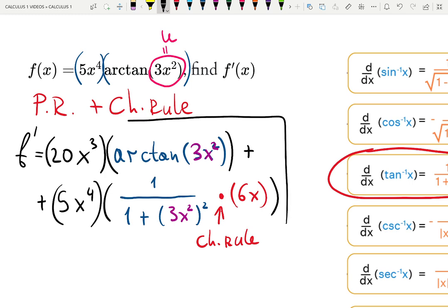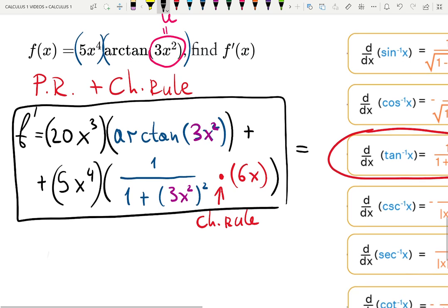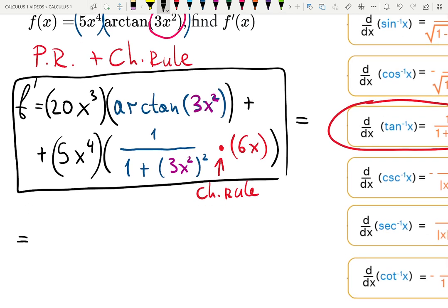That is the final answer, unless we are asked to simplify it. So let me simplify it for you. It will be 20x cubed multiplied by, I don't actually need parentheses for the arctangent, arctangent 3x squared plus.